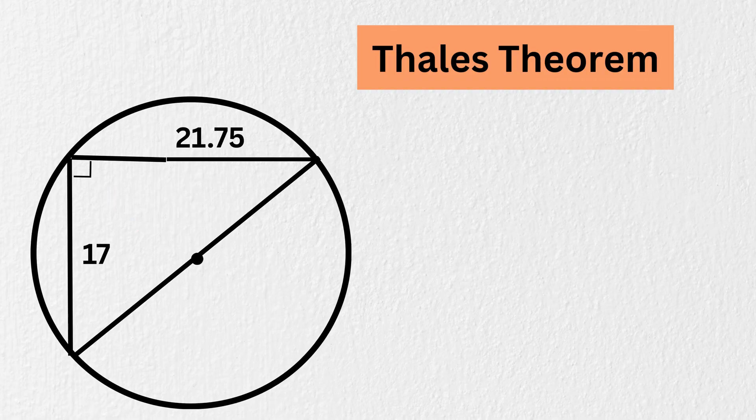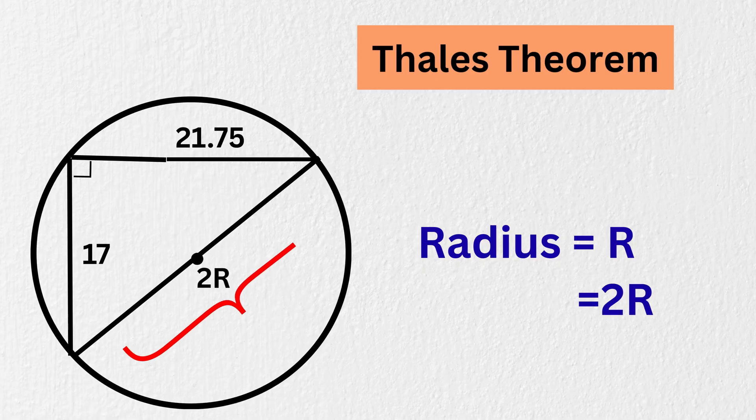That simply means it will pass through the center of the circle. Now if we label the radius of the circle as R, then this diameter will be of length 2 times R. Right?